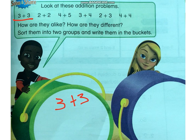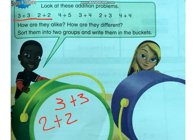2 plus 2. Is it the same? Are they alike? Yes, they are. It's the same number, 2 and 2. We're going to put it as well in the boy's bucket. Now the next one: 4 and 5. Are they the same? No, they're not. The two numbers are different from each other — one is 4 and one is 5. So 4 plus 5, we're going to put it in the girl's bucket.